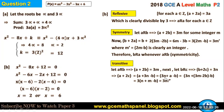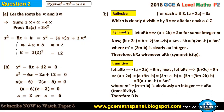Let m'' = n + m - b; since n, m, and b are all integers, m'' is an integer. Therefore a + 2c is clearly a multiple of 3, and the relation is transitive. Since the reflexive, symmetric, and transitive properties all hold, the relation R is an equivalence relation on ℤ.